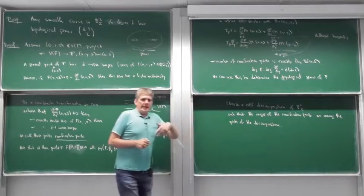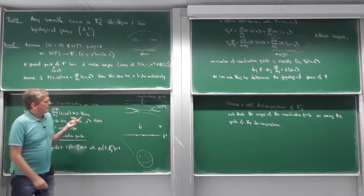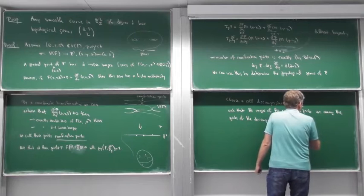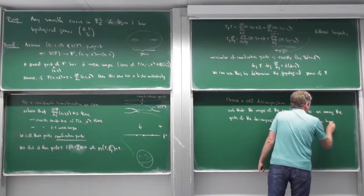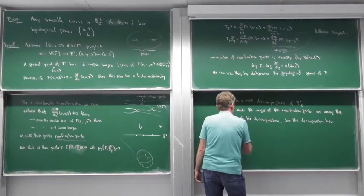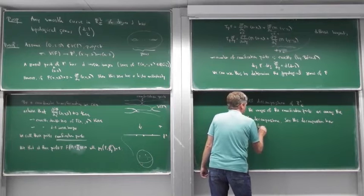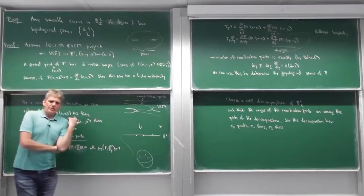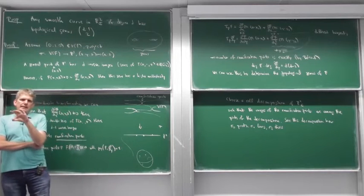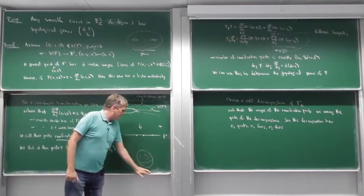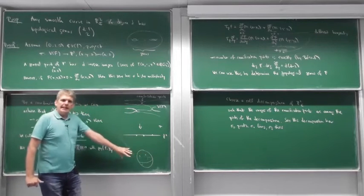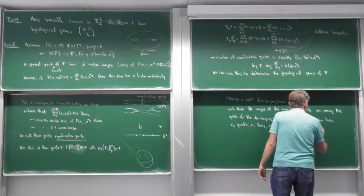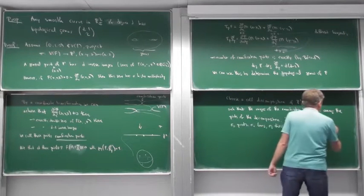Say this cell decomposition has σ₀ points, σ₁ lines, and σ₂ disks. The only thing we know is that the alternating sum is fixed and depends only on the space. For a sphere, we computed last time that σ₀ − σ₁ + σ₂ = 2.